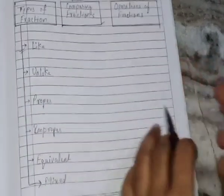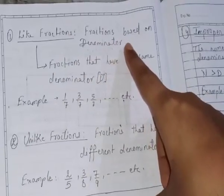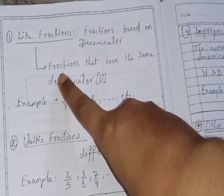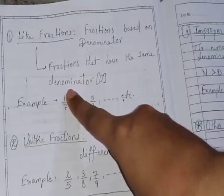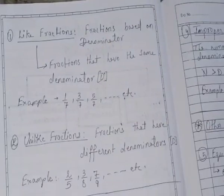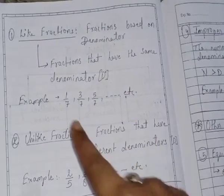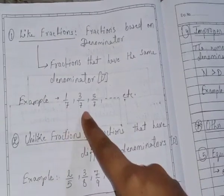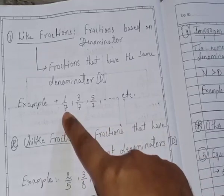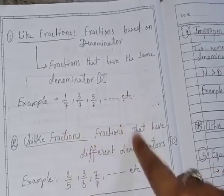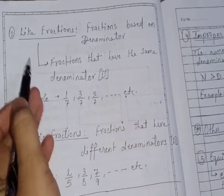What are like fractions? Fractions based on denominator — like fractions are those that have the same denominators. If the denominators are the same, they are said to be like fractions. For example, 1 by 7, 3 by 7, 5 by 7, etc. You can see that the denominators are all 7. So, these are like fractions.